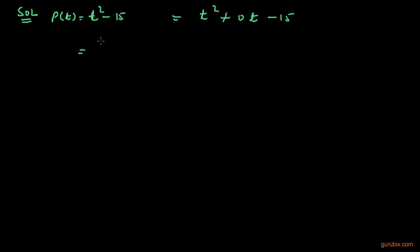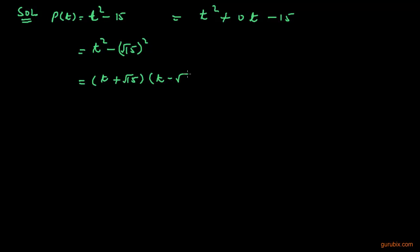Now we shall factorize it. We write it as T squared minus the square of square root of 15, and therefore it equals T plus square root of 15, into T minus square root of 15.